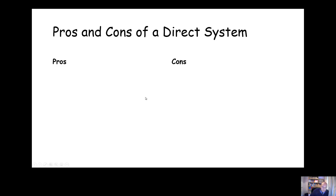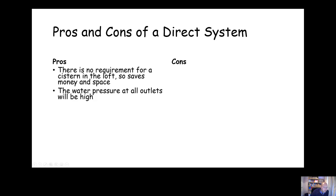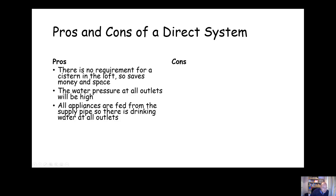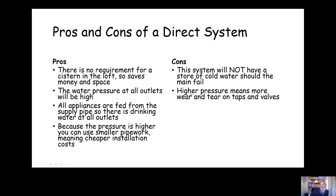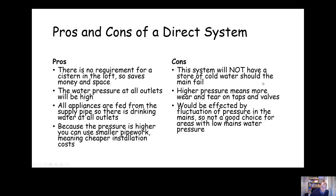The pros of a direct system: no requirement for a storage cistern in the loft, saving money and space. Water pressure at all outlets is high since all appliances are fed from the supply pipe, providing drinking water at all outlets. Higher pressure means smaller pipework can be used, reducing installation costs. The cons: the system will have no store of cold water if the mains fail. Higher pressure means more wear and tear on taps and valves, and the system can be affected by pressure fluctuations on the mains.